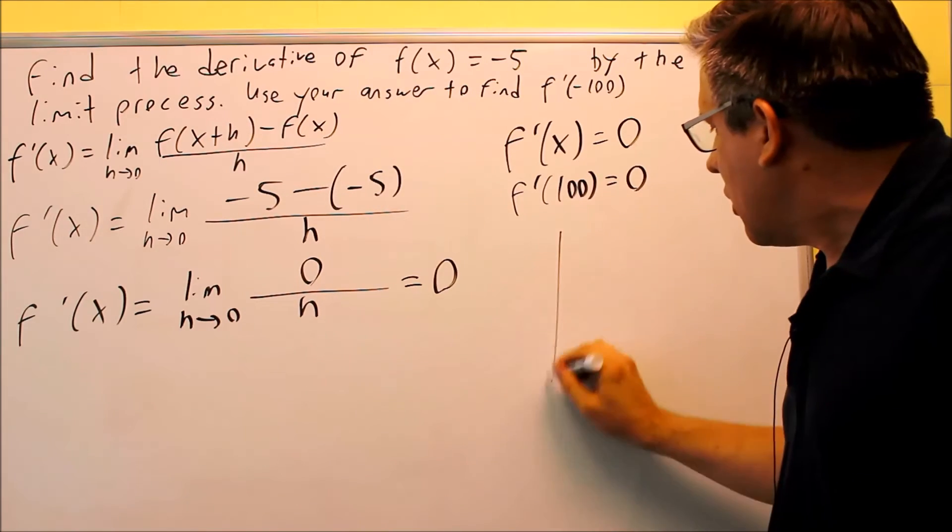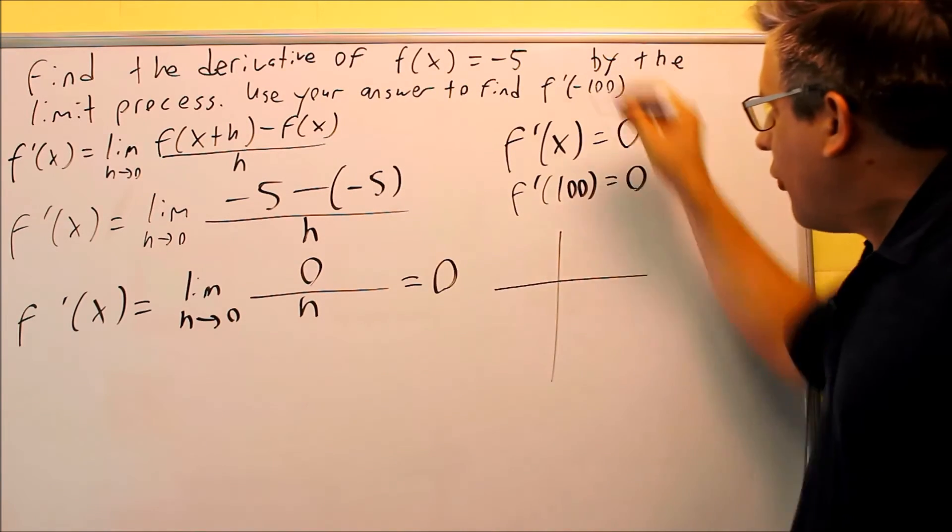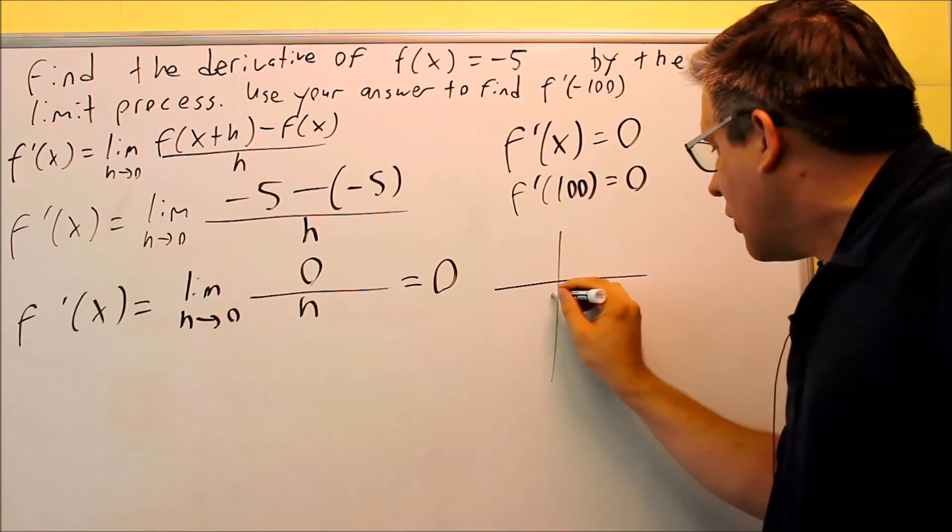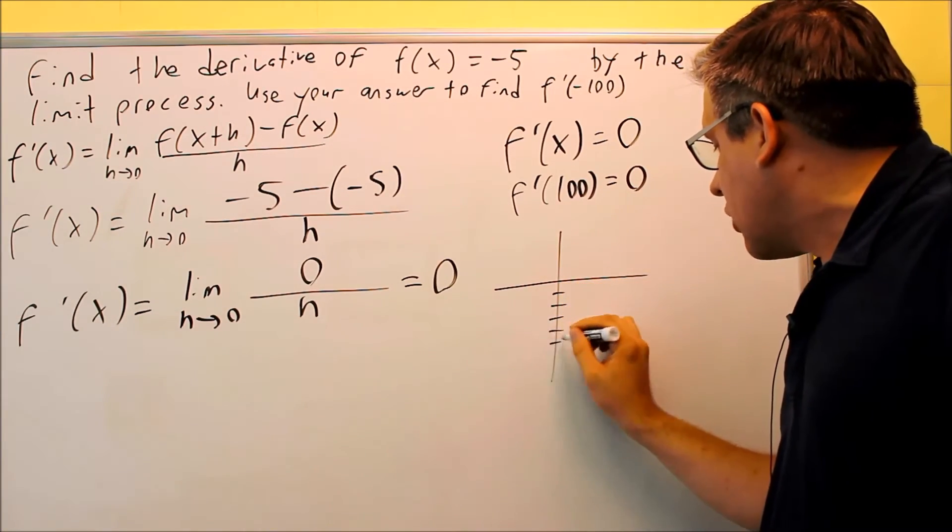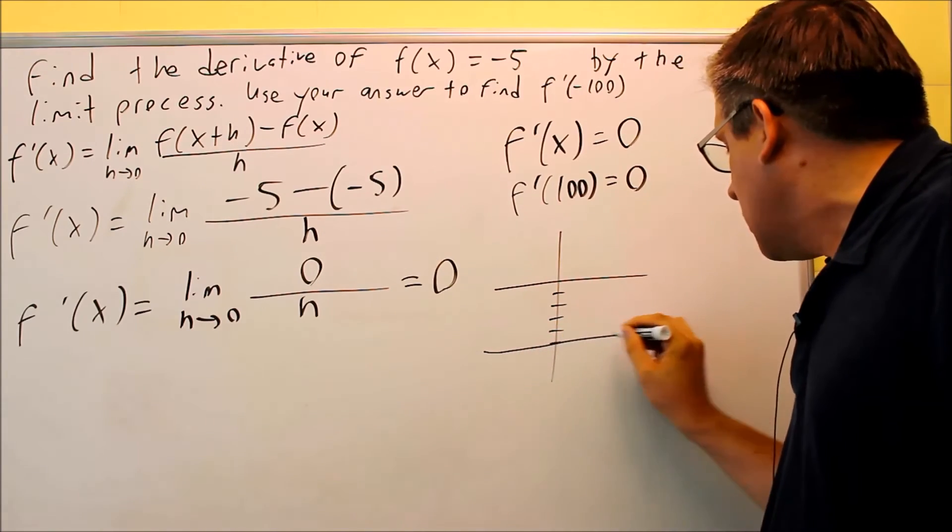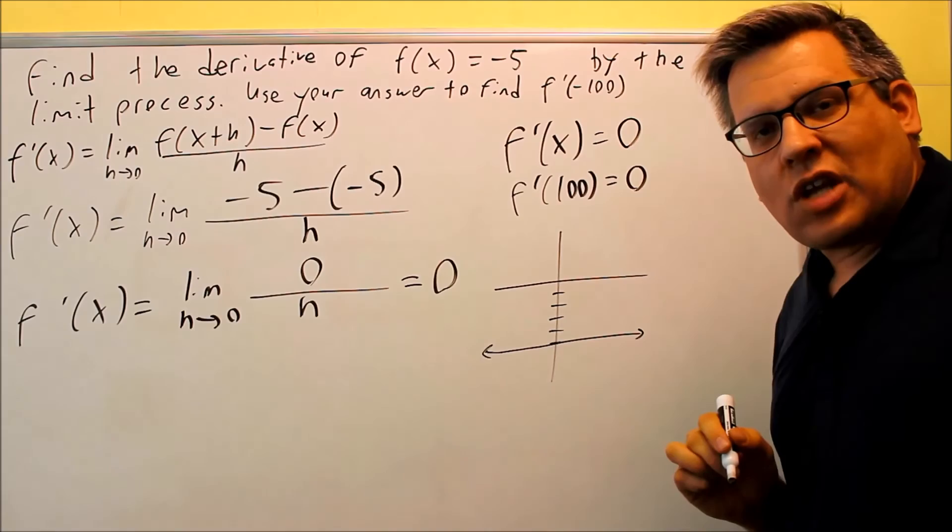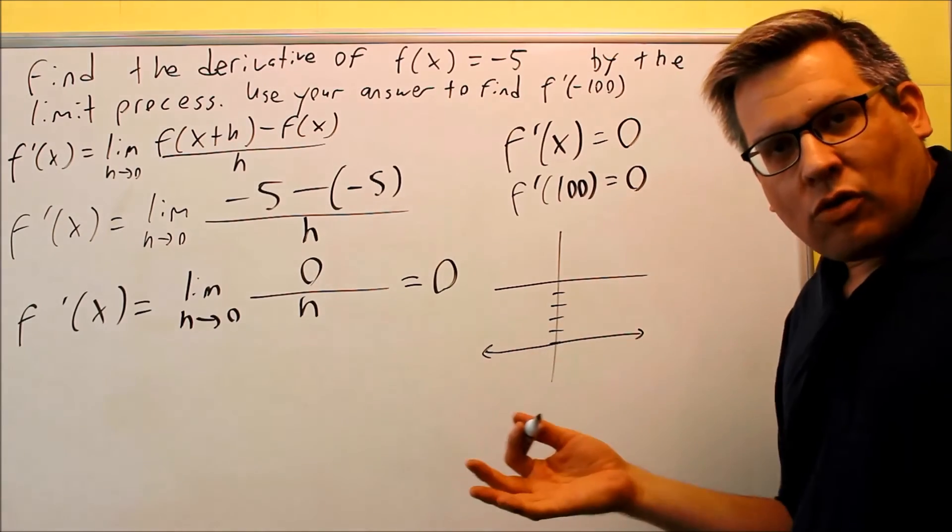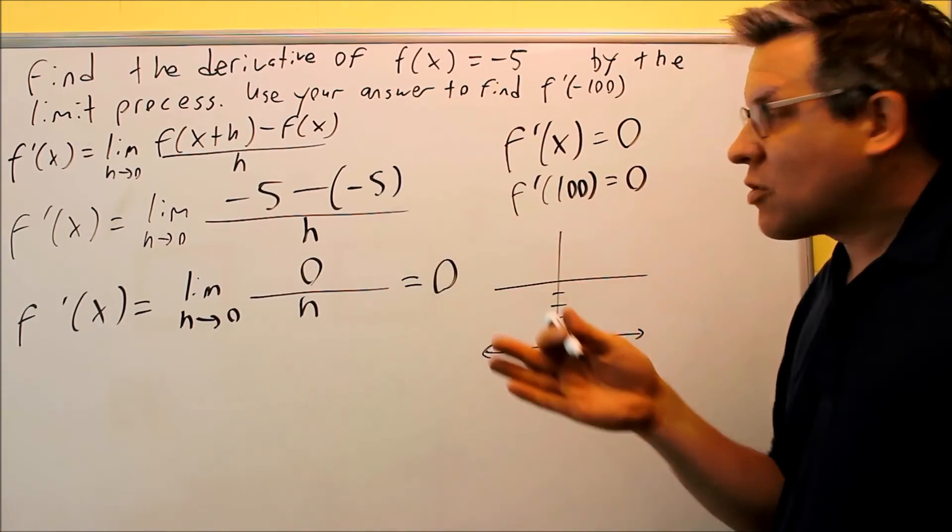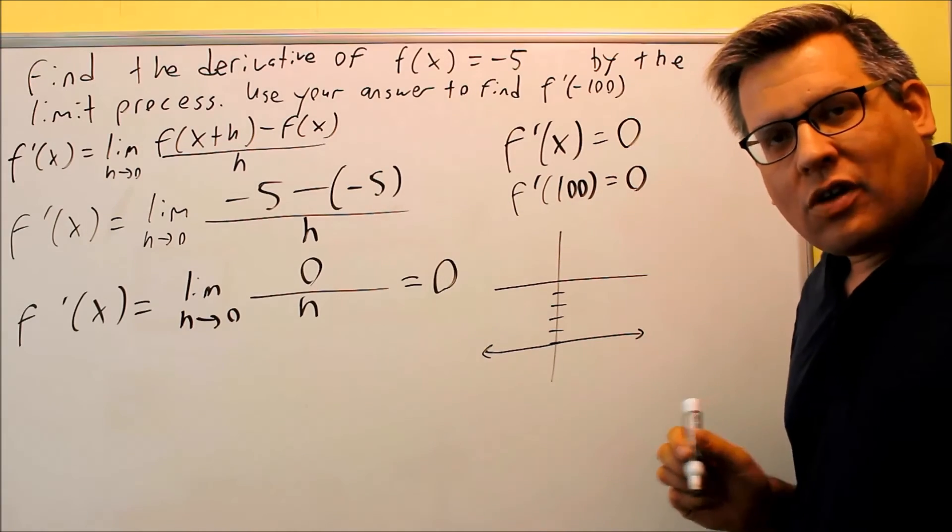Now why is that the case? Well, let's take a look at the graph that we have for this particular one. I have f of x equals negative 5. What is that? Well, that's a horizontal line going through at negative 5. I mentioned that a derivative is the same thing as a slope. So what is this saying?